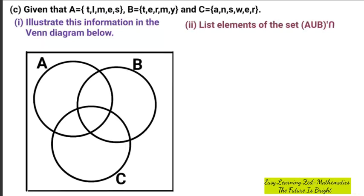Question 3C was as follows: given that A is equal to T-I-M-E-S and B is equal to T-E-R-M-Y, C is equal to A-N-S-W-E-R. So these are the three sets that are given.